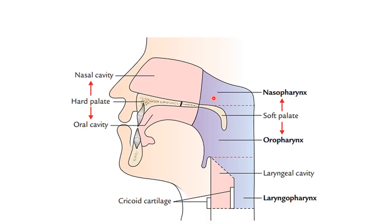The pharynx is subdivided into three parts. From above downwards these are: the nasopharynx, then the oropharynx, and then the laryngopharynx behind the larynx.